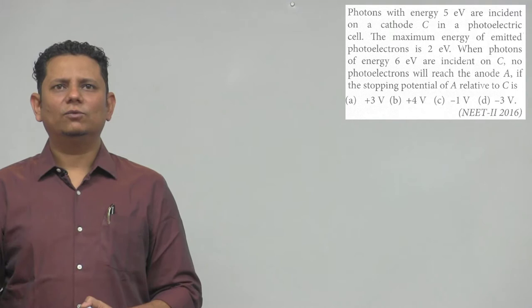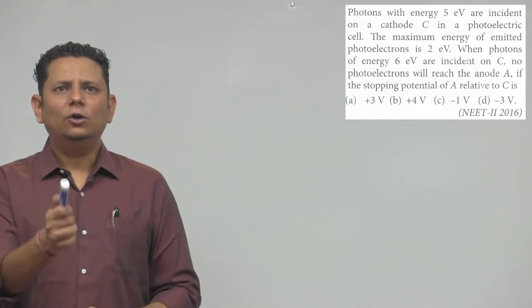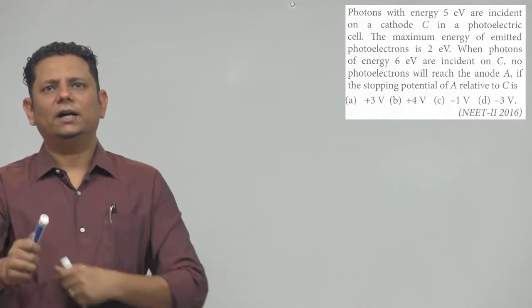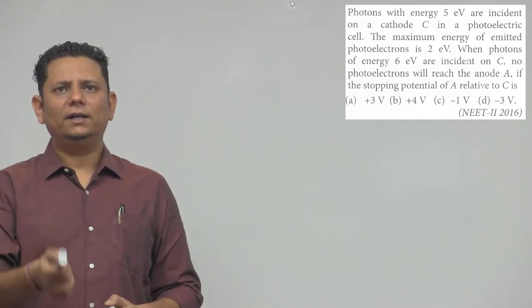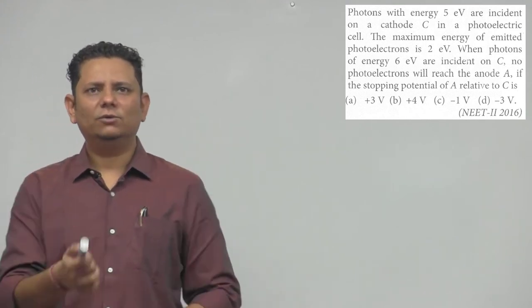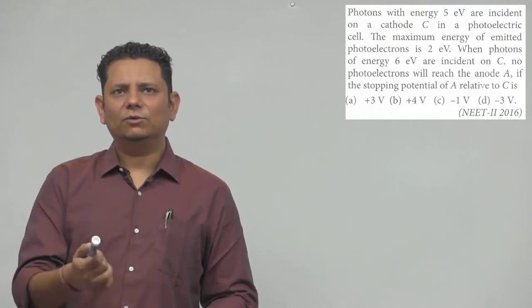of energy 6 electron volt are incident on C, no photoelectrons will reach the anode A if the stopping potential of A relative to C is - option A: +3 volt, B: +4 volt, C: -1 volt, D: -3 volt.